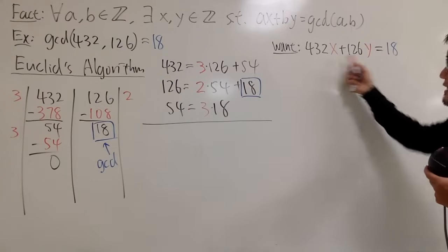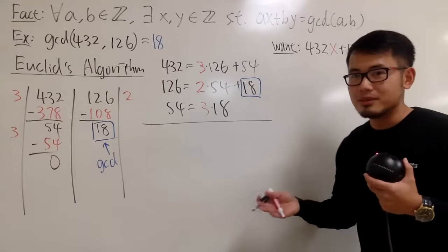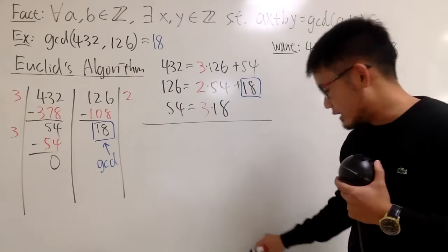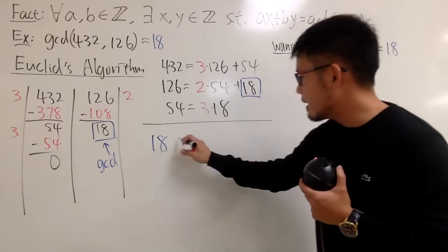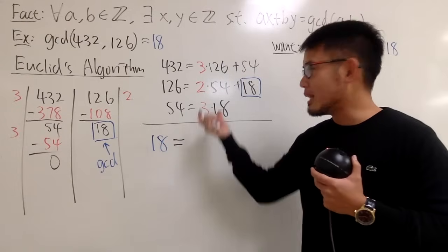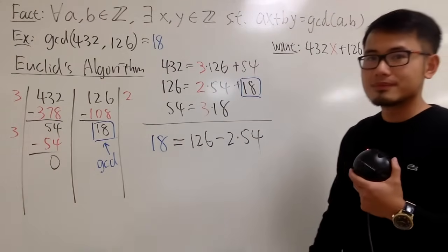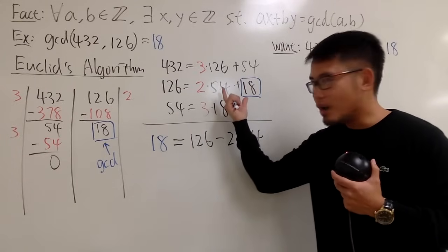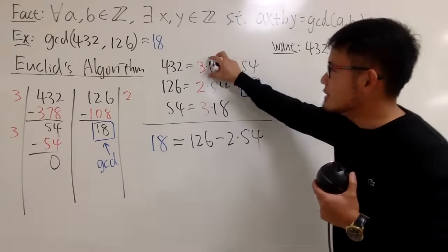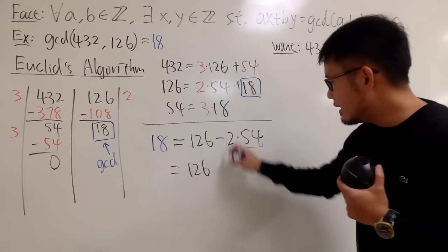When you have big numbers like this, it's not easy to eyeball x and y. Note that x and y can be positive or negative integers. We start from the line where we got 18. Write: 18 equals 126 minus 2 times 54. Do not multiply this out — keep the terms as they are. We use this equation first, then go back to isolate 54.